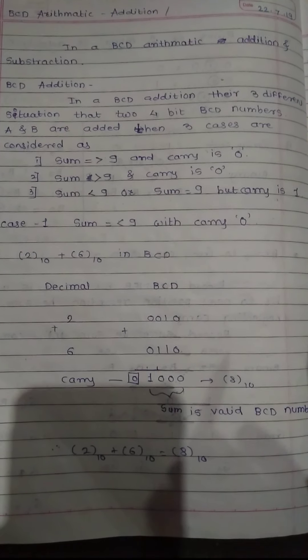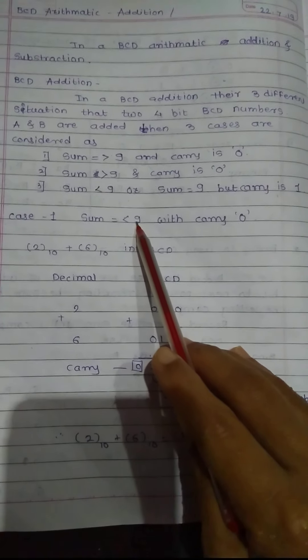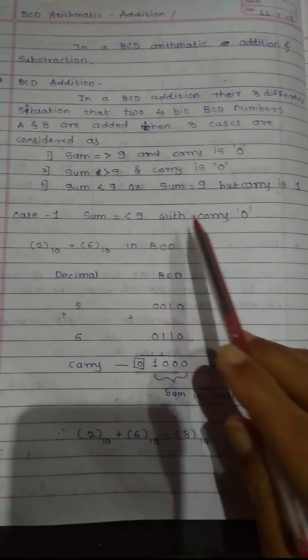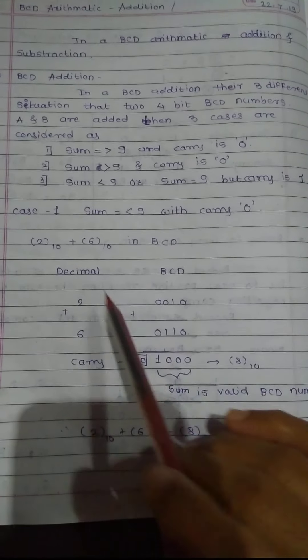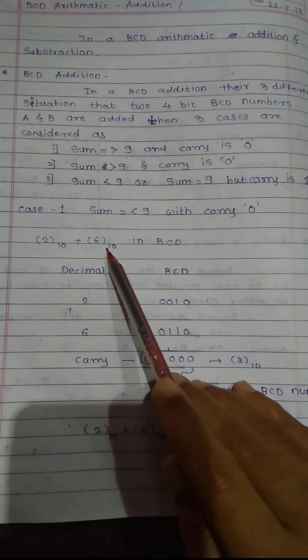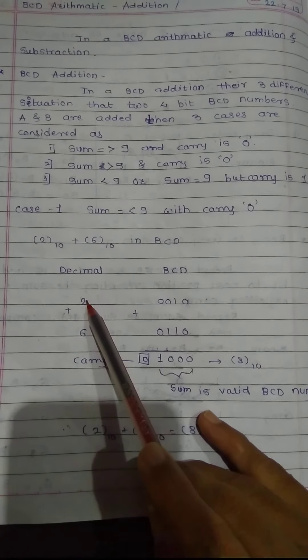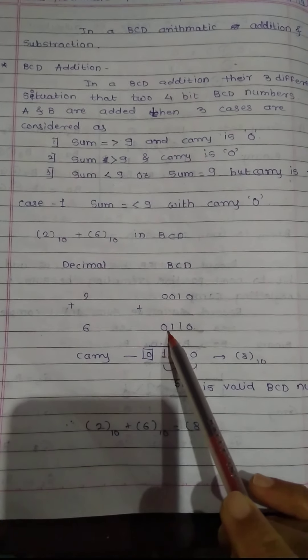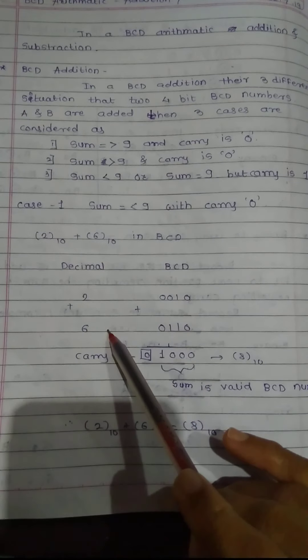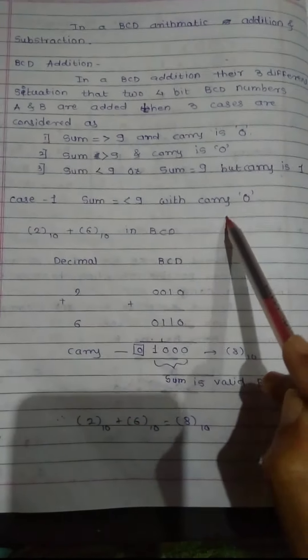The first case: sum is equal to or less than 9, with carry 0. Example — first number is 2, second number is 6. In BCD addition, decimal 2 is represented as 0010 and decimal 6, since BCD and binary are the same for 0 to 9, is represented as 0110. We add these two numbers; since 2 plus 6 equals 8, the sum is less than 9.